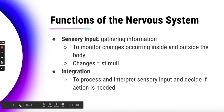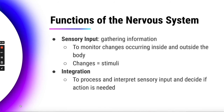We're going to start with functions of the nervous system. The main functions are to have sensory input — gathering information from the environment. It lets changes be monitored that are occurring both inside and outside of the body. Those changes are called stimuli. It could be something happening in your body, maybe you were exposed to some kind of pathogen that would make you sick, or it could be that you walked outside in the middle of winter without a coat on.